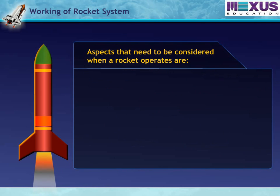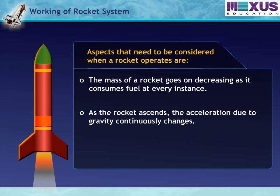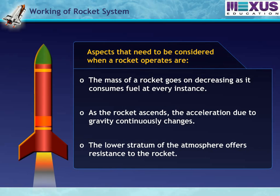The practical aspects that need to be considered when a rocket operates are: the mass of a rocket decreases as it consumes fuel at every instance; as the rocket ascends, the acceleration due to gravity continuously changes; and the lower stratum of the atmosphere offers resistance to the rocket.